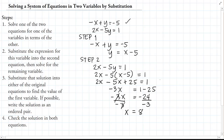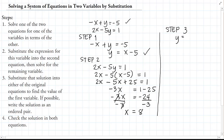Step 3: we substitute the solution back to find the value of the other variable. Either the first or second original equation can be used, but since we already have Y equals X minus 5, we can use that directly. Substituting X equals 8, we get Y equals 8 minus 5, so Y equals 3. We have now solved for both X and Y.